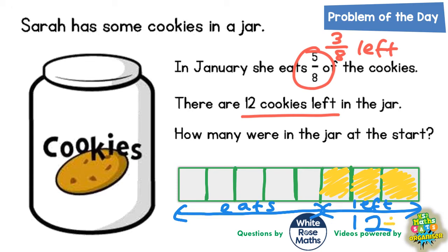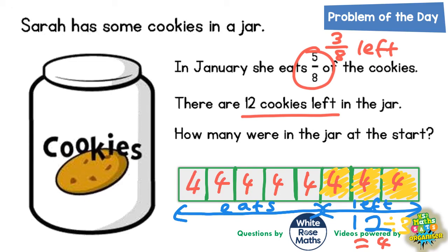These three pieces are worth 12 cookies between them. If there's three pieces and you split 12 into three pieces, it means that each piece must be worth 4, because 12 divided by 3 is 4. So 4 cookies, 4 cookies, 4 cookies — and that obviously means that all the other eighths are also worth 4: 4, 4, 4, 4, 4, and 4.